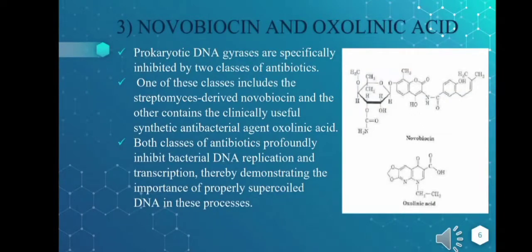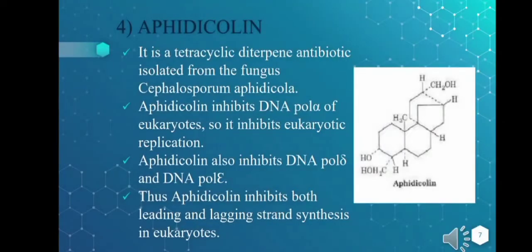The third inhibitor of DNA replication is novobiocin and oxolinic acid. Generally, in prokaryotic DNA, gyrases are specifically inhibited by two classes of antibiotics. One class includes the Streptomyces-derived novobiocin, and the other contains the clinically useful synthetic antibacterial agent oxolinic acid. Both classes profoundly inhibit bacterial DNA replication and transcription, demonstrating the importance of properly supercoiled DNA.